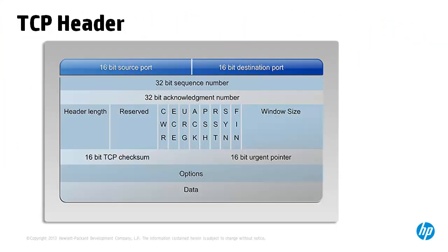TCP has various flags which are used to influence the data flow across a TCP connection. The SYN bit is set on when initiating a connection — it's used to synchronize sequence numbers and is only used on the first packet. The ACK bit is set on in acknowledgement of received data. When a session is first established, the initiator will send TCP traffic with the SYN bit set, the receiver sends back a SYN-ACK, and the initiator ACKs on the third packet — a three-way handshake.